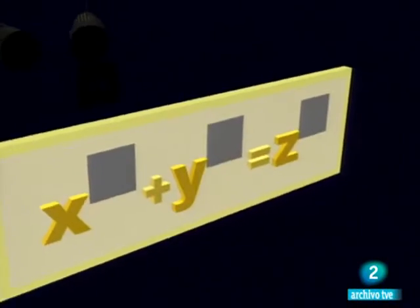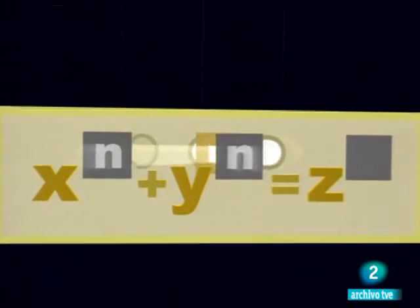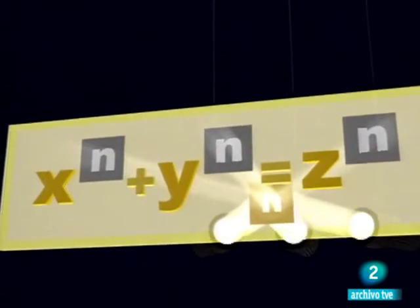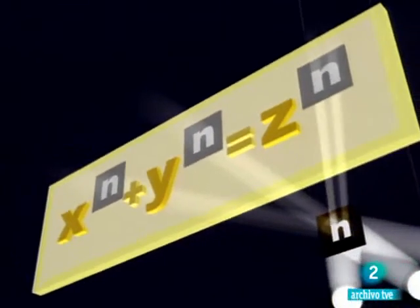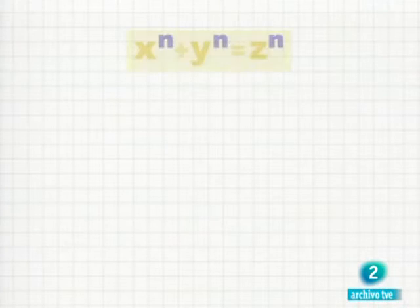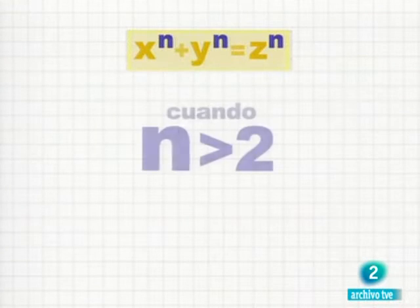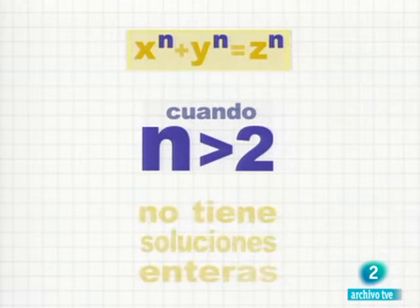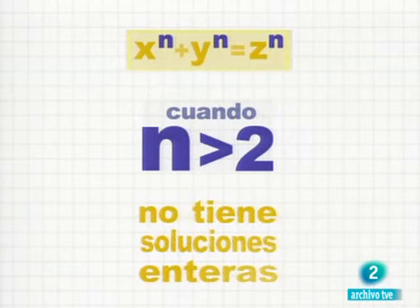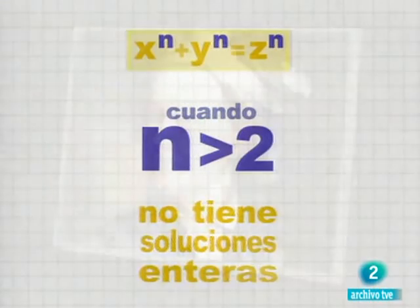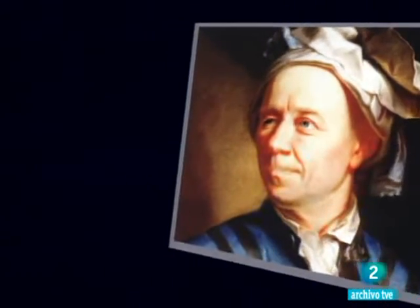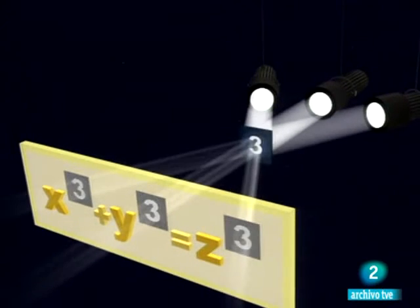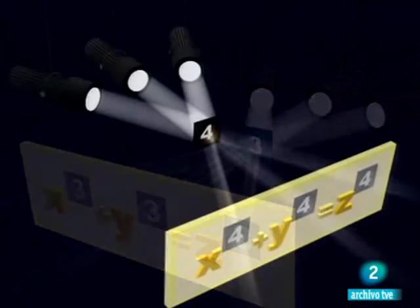Pero también se atrevió con el más conocido y recientemente demostrado último teorema de Fermat. No existen tres números enteros, x, y y z, que verifiquen que x elevado a n más y elevado a n sea igual a z elevado a n cuando n es mayor que 2. Pues bien, aunque Euler esta vez no logró demostrar el teorema, al menos nos dejó las demostraciones cuando n es igual a 3 y n es igual a 4.